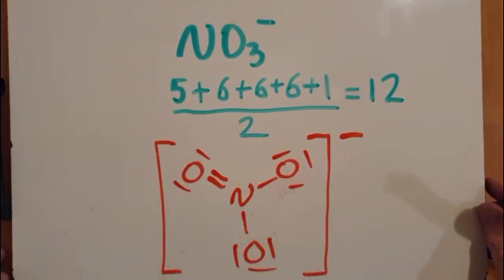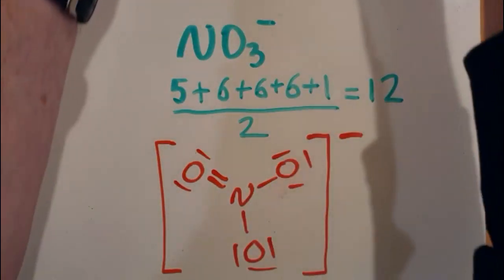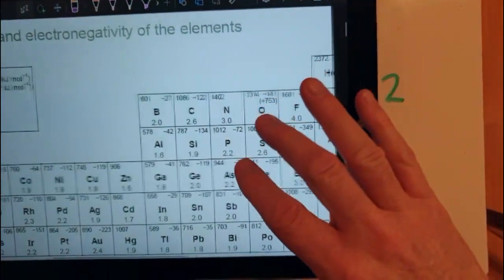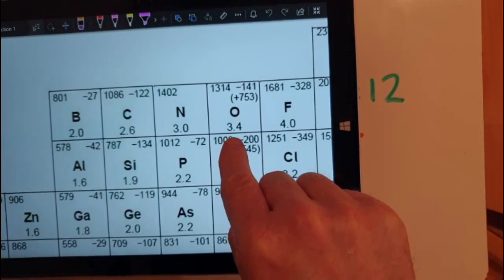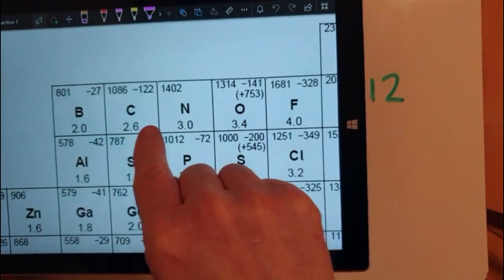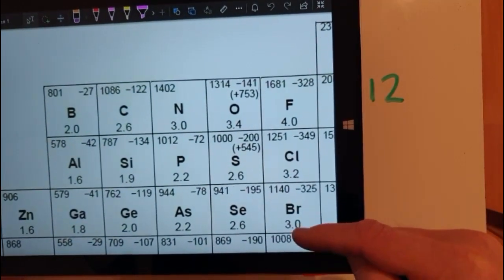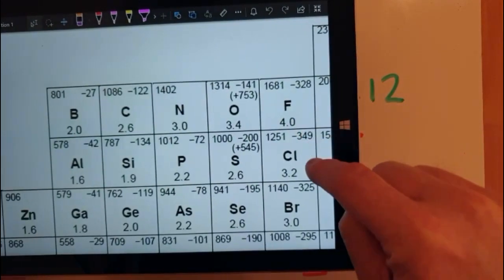Let's look at the bond polarities here. So in order to work out the bond polarities, you need to know the electronegativity values. So for nitrogen, the electronegativity is 3 and oxygen is 3.4. Notice as you go across the period, the electronegativities increase, and as you go up the group, the electronegativities increase, giving fluorine as the highest electronegativity.